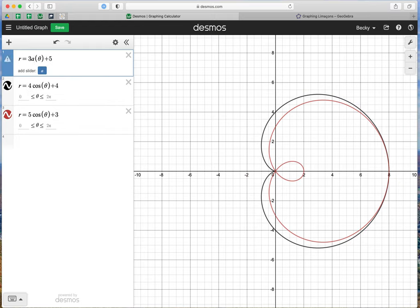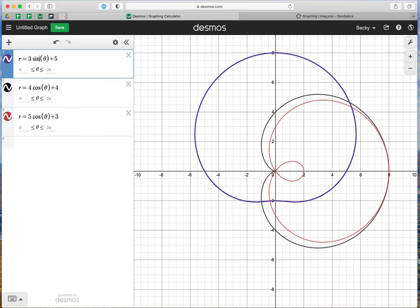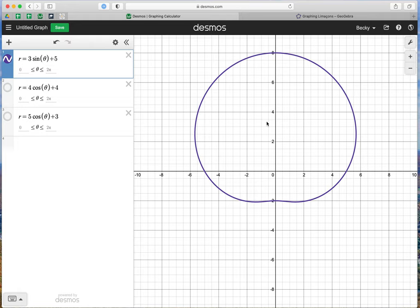We can do 3 sine theta plus 5, so I'll do these one by one. We used to have this being horizontal, now it's vertical.